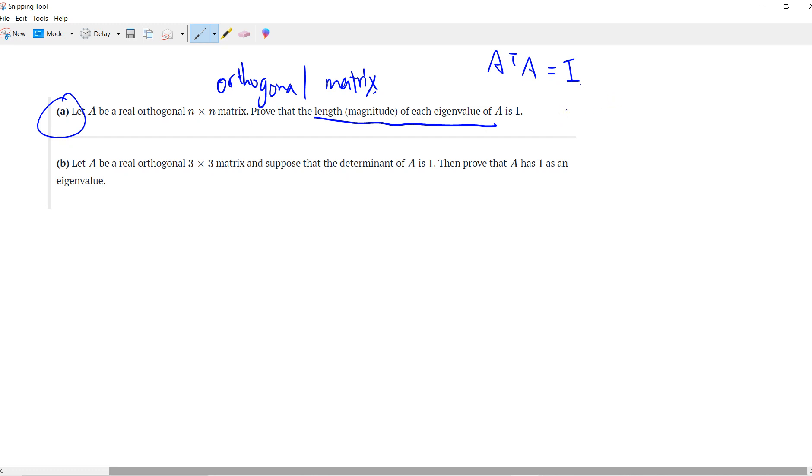Eigenvalue means that x is a non-zero vector such that A x equals lambda x, where lambda is some complex number.